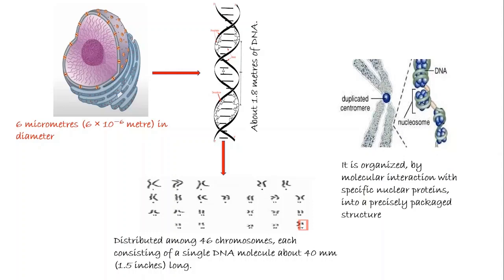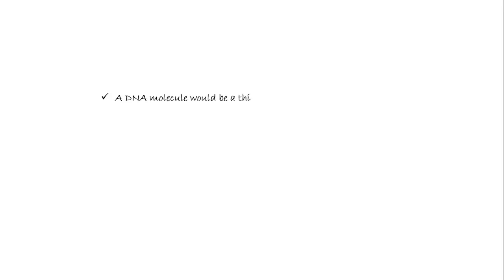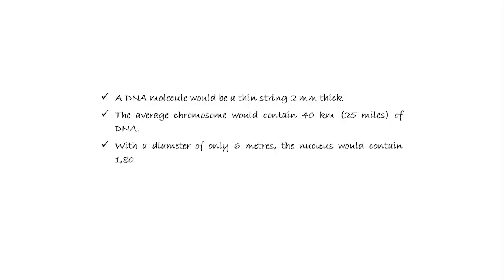The nucleus is not simply crammed or wound into the nucleus like a ball of string. Rather, it is organized by molecular interaction with specific nuclear proteins into a precisely packaged structure. This combination of DNA with proteins creates a dense compact fiber called chromatin. A DNA molecule would be a thin string with 2 mm thickness and the average chromosome would contain 40 km or 25 miles of DNA. With a diameter of only 6 meters, the nucleus would contain 1,800 km of DNA.